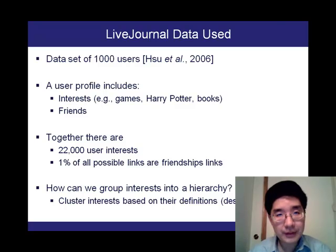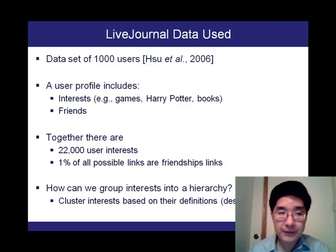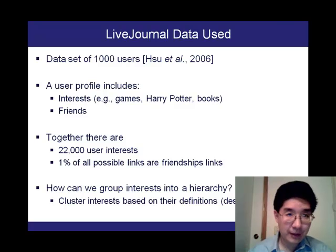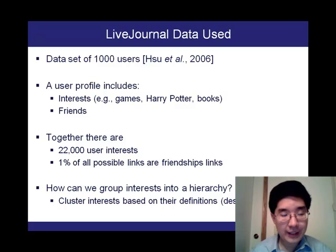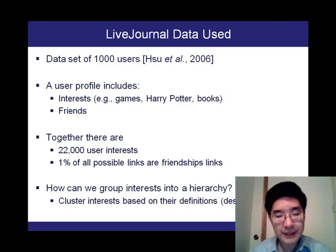We've developed a dataset of 1,000 users where a user profile includes the interests of the user — such as games, Harry Potter, and books — as keywords or key phrases. In LiveJournal, a user can have up to 150 interests with up to four keywords that are space-delimited, and each keyword can be up to 15 characters in length. The user profile also includes the set of friends indicated by a user and the set of people that indicate that user as their friend — the adjacent and incident edges of each node. In total, there are 22,000 unique user interests among 1,000 users, and among 1,000-squared possible friendships, there are about 1% — roughly 7,500 — extant links.